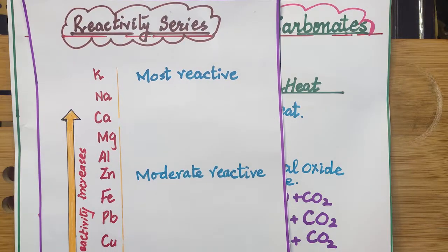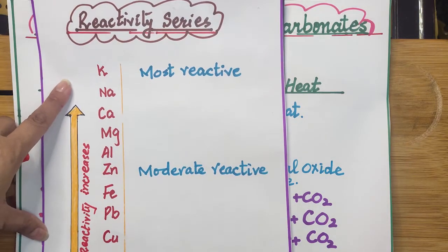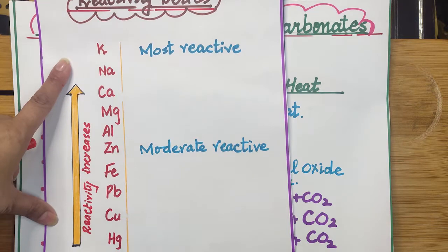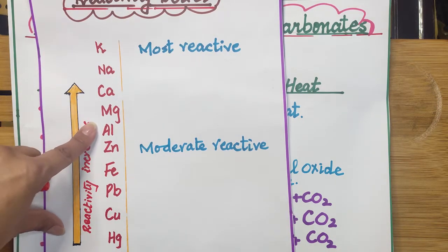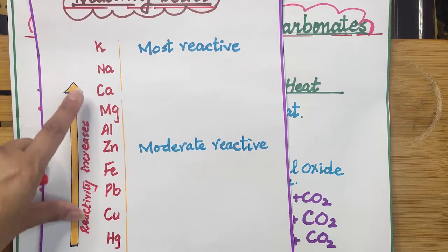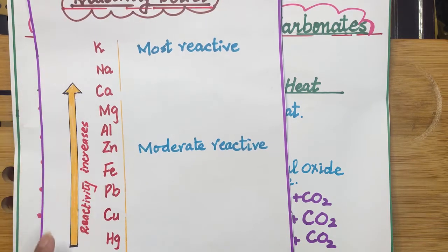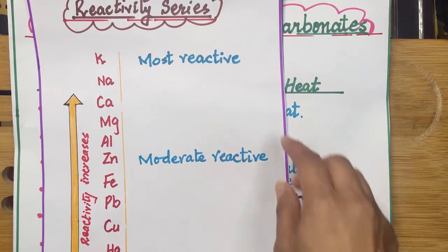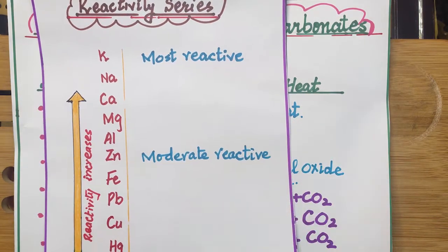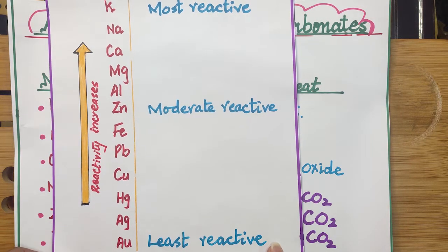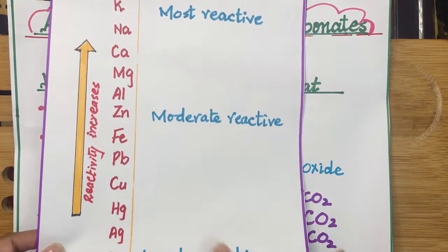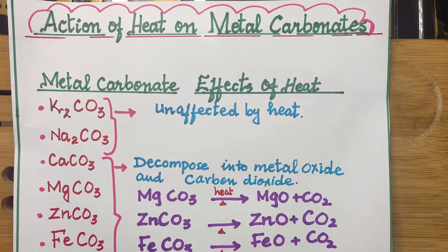As we have already described, in this reactivity series the most reactive metals are at the top. Reactivity increases as we move up, so most reactive metals are at the top, moderate in the middle, and least reactive at the bottom. After having a look at this reactivity series we will move towards their carbonates.